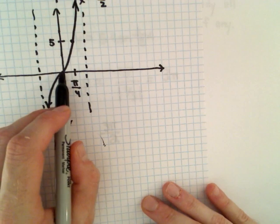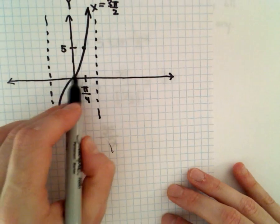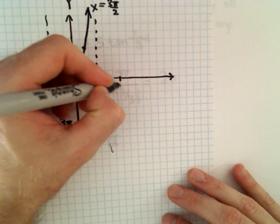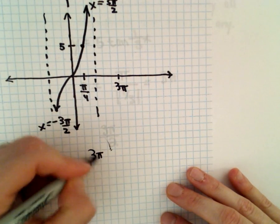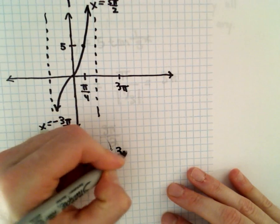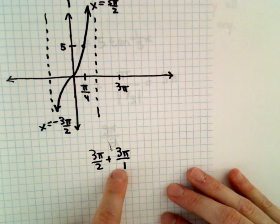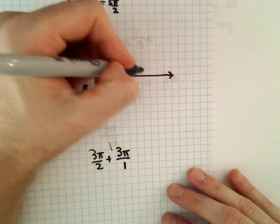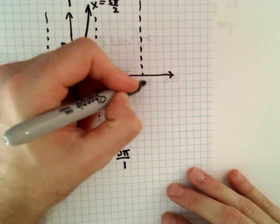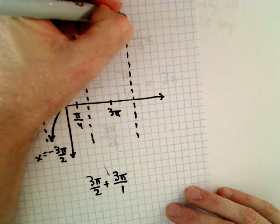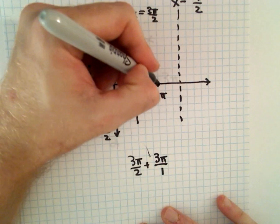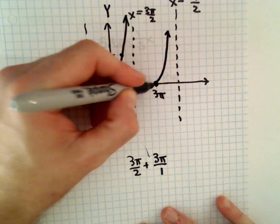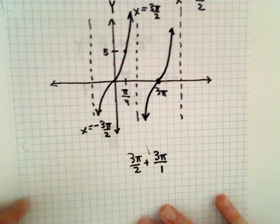But if we move over another three pi units, there's three pi. Three pi over two plus three pi, that'll be six pi over two. Our next positive vertical asymptote is going to occur at x equals nine pi over two. And again, it's got that same shape to it.